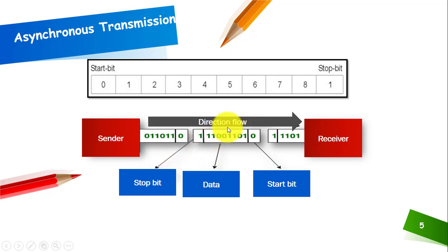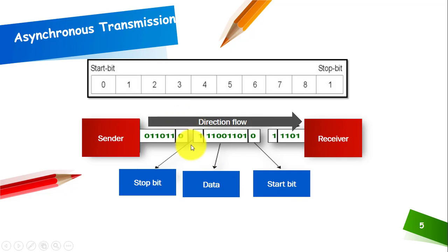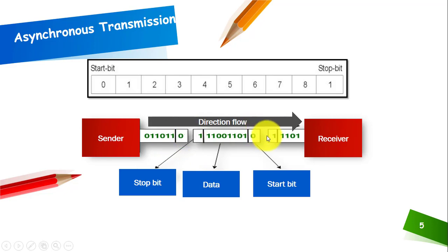This is the stop bit, this is the data, and this is the start bit. You can also see the gap between the bytes, whereas in synchronous transmission there was no space at all, but here in asynchronous transmission there are spaces between the bytes or between the data to be sent.